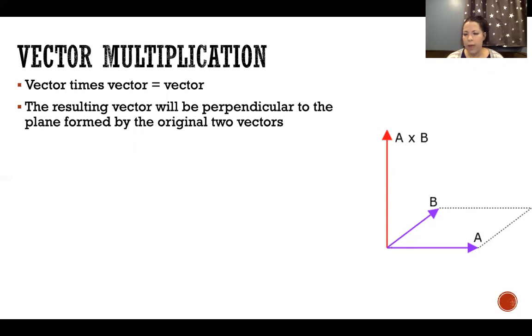the resulting vector will be perpendicular to that plane, like we see in the picture here. If we multiply a times b, the resulting vector is going straight up in the air, perpendicular to the plane formed by a and b.